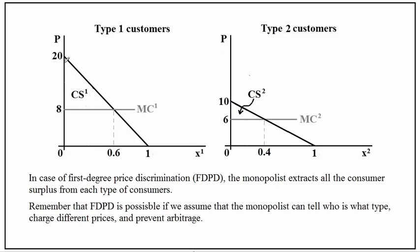These triangles will be consumer surplus for type 1 customers, and this triangle will be consumer surplus for type 2 customers. The monopolist is going to charge to cover its cost — this is the area of this rectangle and the area of this rectangle. If we don't include those rectangles, they become part of the consumer surplus for each type of customer.